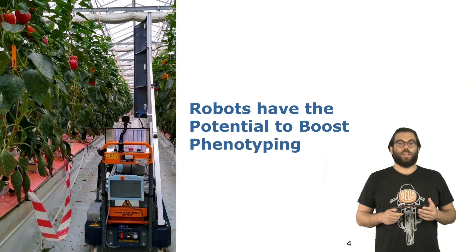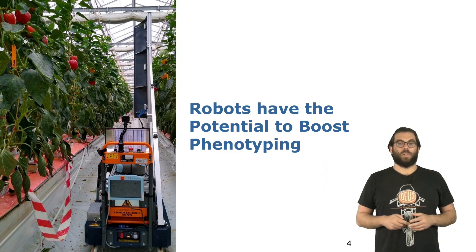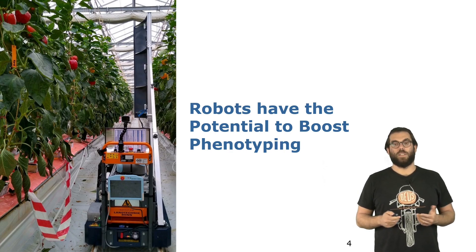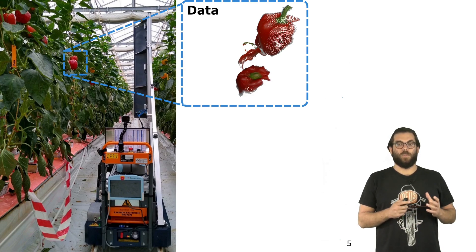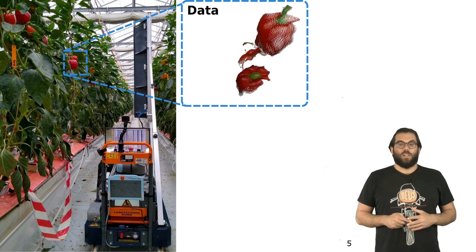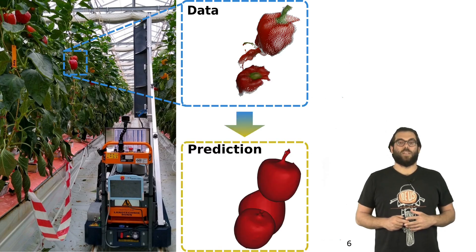Robots, on the other hand, have the potential to boost phenotyping practices. A typical robot is equipped with sensors, like an RGBD camera, as you can see here in the image, that will produce data which is typically noisy and partial. Now our goal would be to turn this partial data into a complete 3D model of fruits, as you can see here on the bottom.